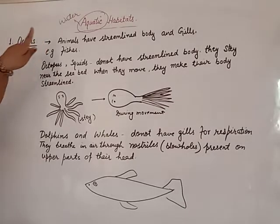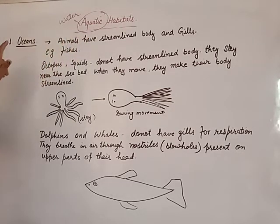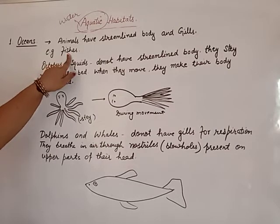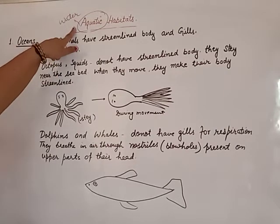First of all, we will study about the ocean under aquatic habitat. One ocean animal we have already discussed is fish — streamlined body and gills. Streamlined body helps for free movement in water with the help of fins, and gills are for the respiration or breathing of the fish. We have already discussed the adaptation of fish for surviving in aquatic habitat.